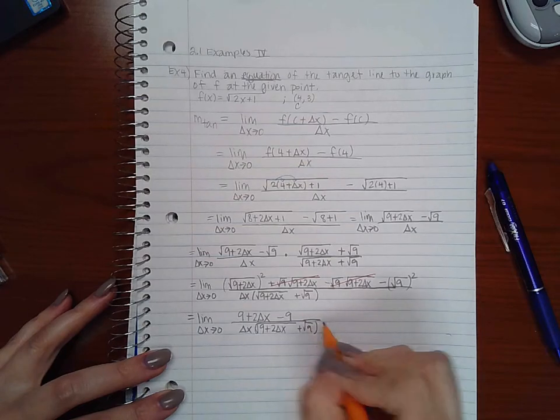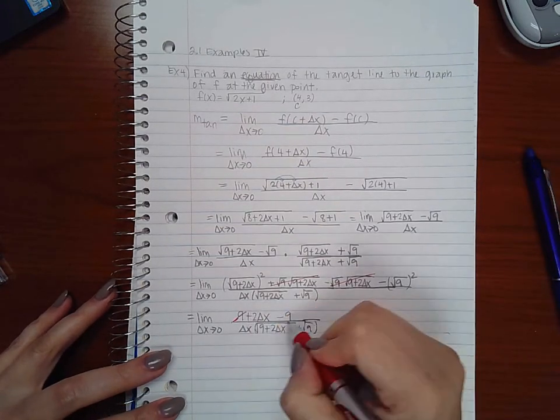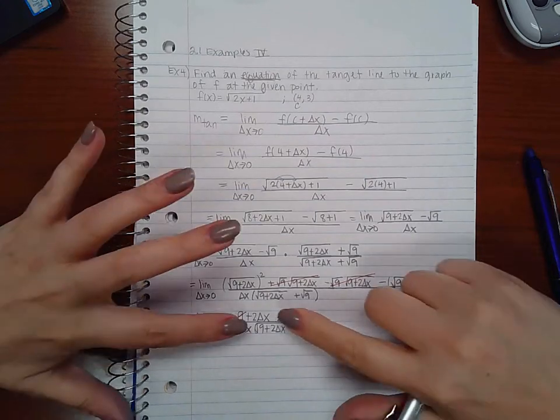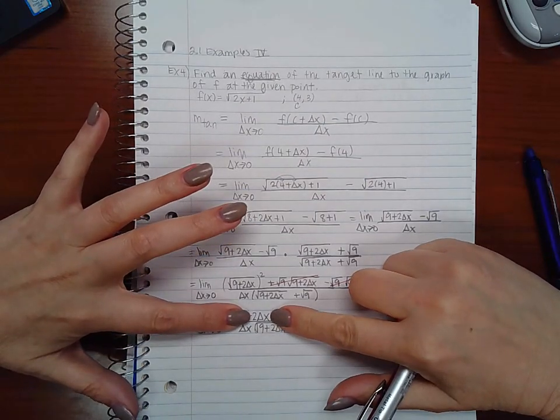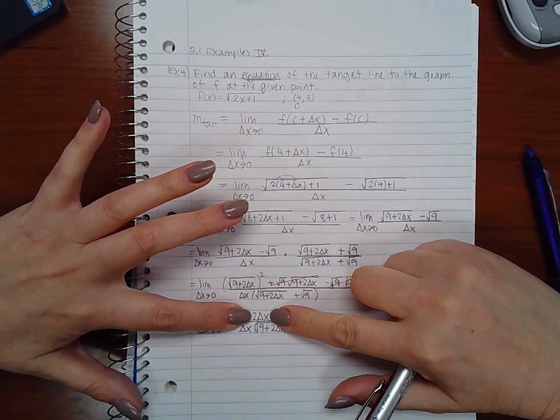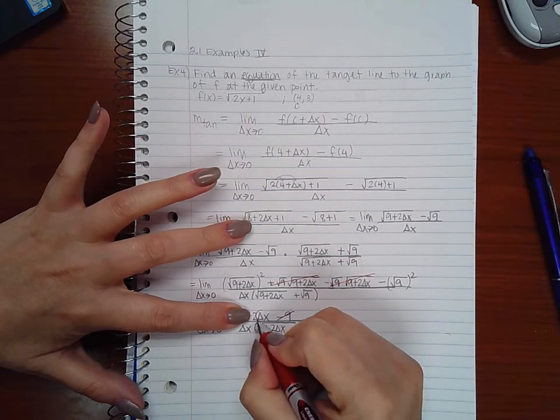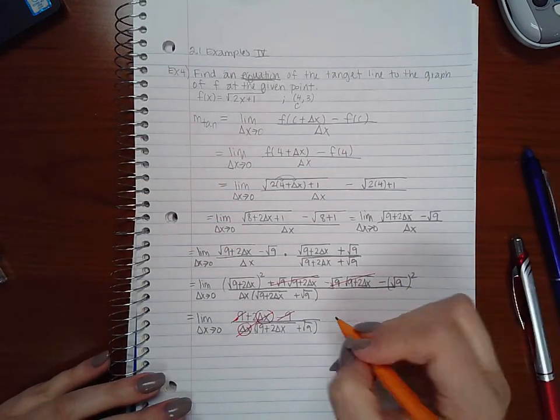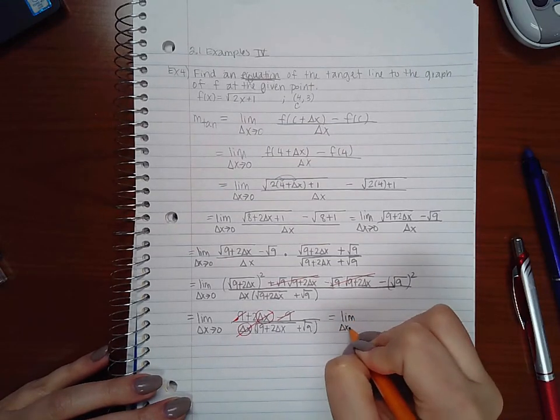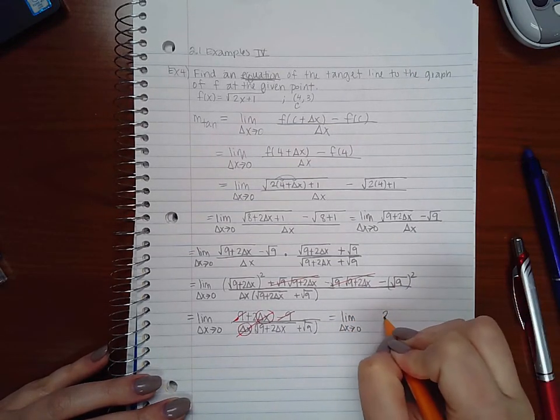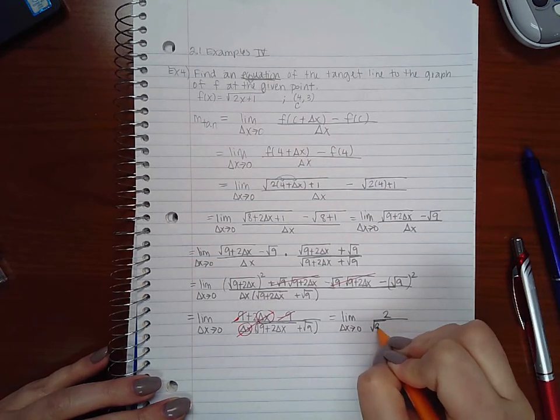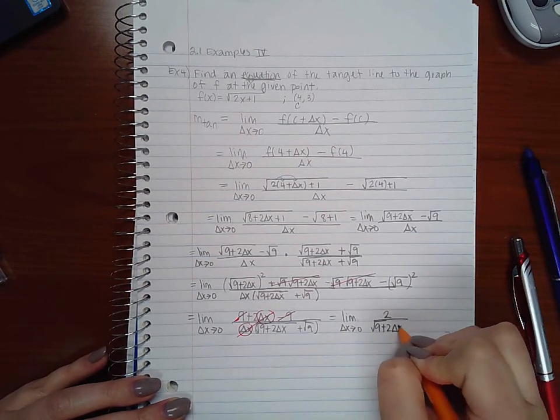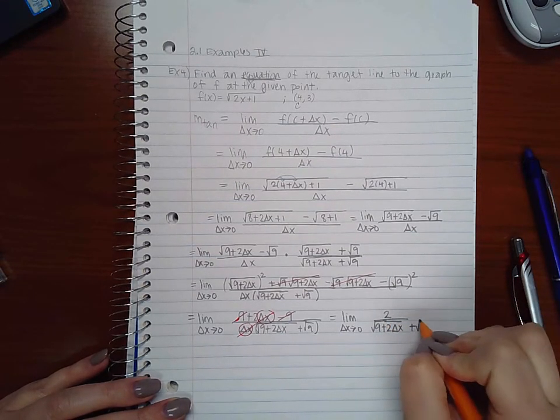And just to save some space, I'm going to do a lot of reducing here. So nine minus nine will reduce, and now if I imagine that that's not there, instead of rewriting the fraction all over again, I notice that this factor and this factor will reduce as well. So then I end up with two over the square root of nine plus two delta x plus the square root of nine.